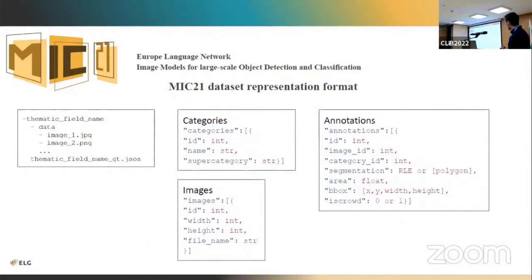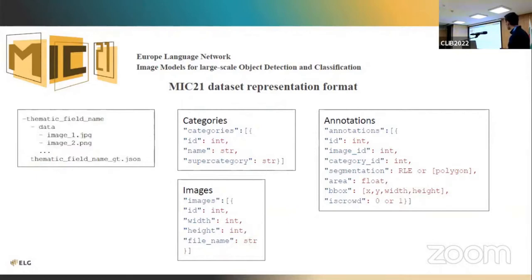Each thematic domain is a collection of images in various formats, plus one JSON file containing the actual information about objects detected in the image — as bounding boxes and segmentation masks. We use the COCO standard representation with three data structures: one describing the images, one describing the categories, and one describing all the localized objects with their segmentation and bounding boxes, which we call localization and annotation.